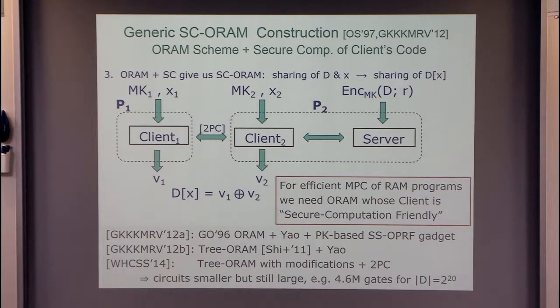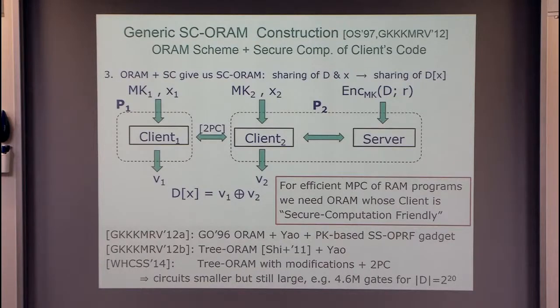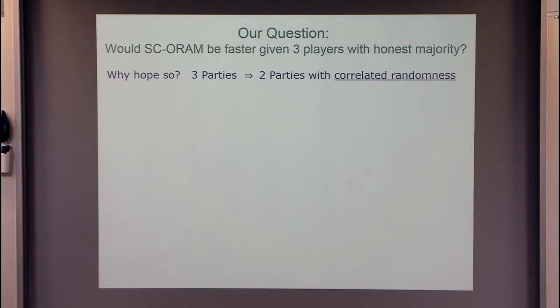So they will talk and they will know what to discuss with the server. The output will be a secret sharing of D of X. Privacy is maintained because this guy P1 has the secret key share and the index share, and the right guy has another share of the secret key and another share of X, and then the encryption of the data. So we managed to apply any ORAM, any 2PC, put them together, and get this. So ORAM and multi-party computation gives us SCORAM.